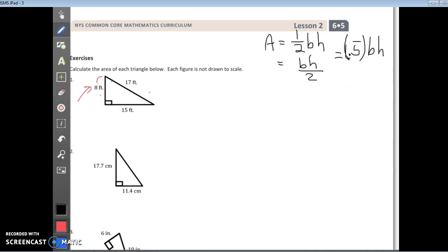On every problem, what I want you to do is write out area equals one-half base times height, and then we're just going to fill in our numbers. We're trying to find area. So area equals one-half times, and I'm going to pick 15 as my base, 15 feet times 8 feet.